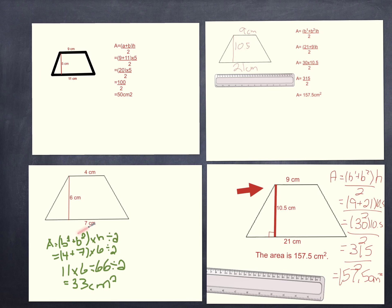To get the area, I did side A plus B times height divided by 2. Base 1 is 4 centimeters, and base 2 is 7 centimeters, and the height is 6 centimeters.